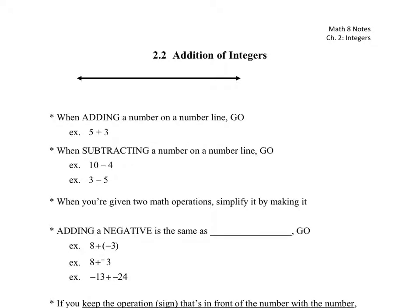What we're looking at now is how do you combine numbers together. We're not going to deal with decimals at all, so integers, 2.2 addition of integers.